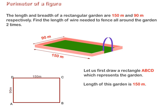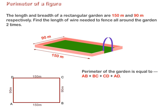Length of this garden is 150 m. Breadth of this garden is 90 m. Perimeter of the garden is equal to AB plus BC plus CD plus AD. That is, 150 plus 90 plus 150 plus 90 equal to 480 m.